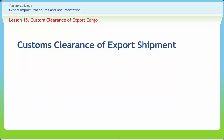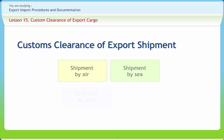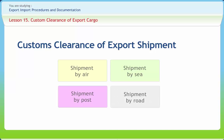Every exporter is required to seek customs clearance of export goods before sending them to the importer. The exporter can send the shipment through any one of the modes of transportation: shipment by air, shipment by sea, shipment by post, or shipment by road. The procedure for customs clearance is essentially the same whether the shipment is sent by air, sea, post, or land route; however, there are minor variations.